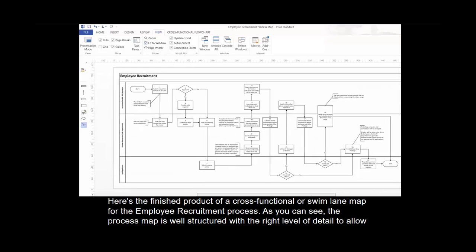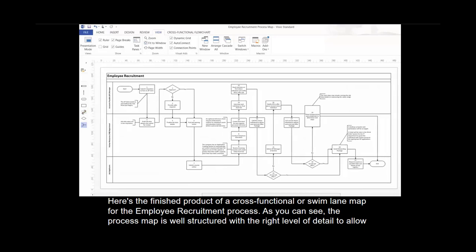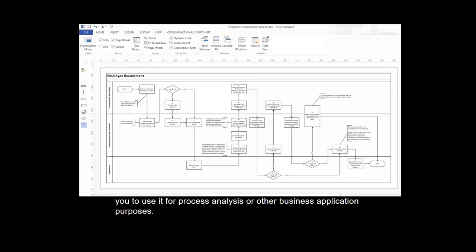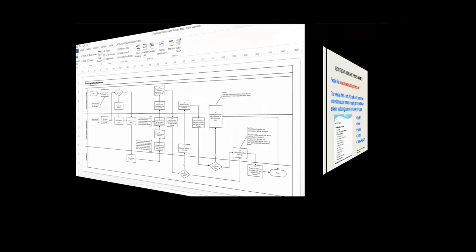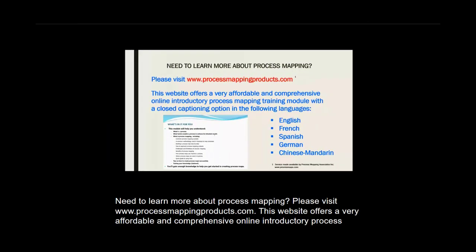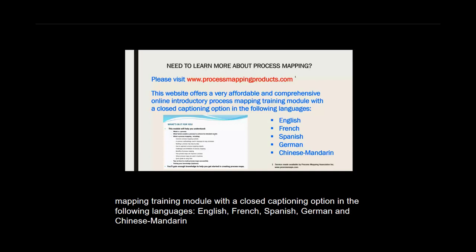Here is the finished product of a cross-functional or swim lane map for the employee recruitment process. The process map is well-structured with the right level of detail to allow you to use it for process analysis or other business application purposes. To learn more about process mapping, please visit processmappingproducts.com. This website offers a very affordable and comprehensive online introductory process mapping training module with a closed captioning option in the following languages.